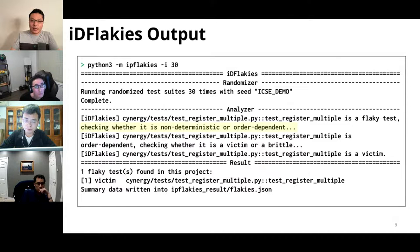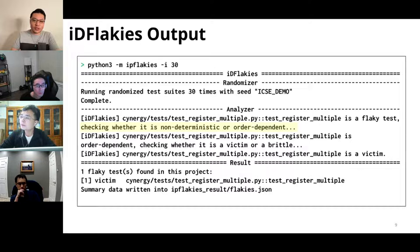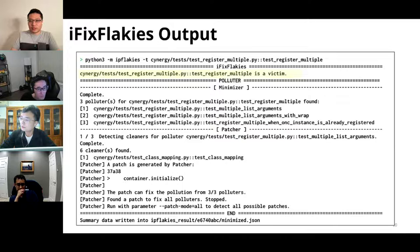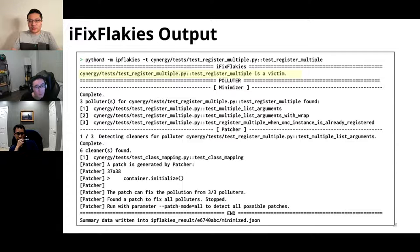Regarding IP-Flakeys output: first it checks whether a flaky test is non-deterministic due to concurrency or actually order dependent. Once confirmed as order dependent, it further categorizes it as victim or brittle and saves results to a JSON file. IFix-Flakeys then checks whether the given test is order dependent, finds polluters, finds cleaners, and generates a patch. That concludes the IP-Flakeys presentation.